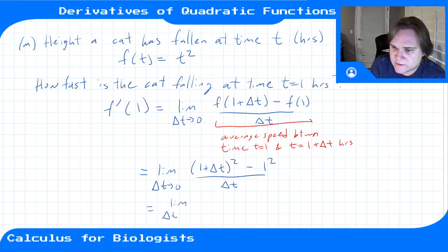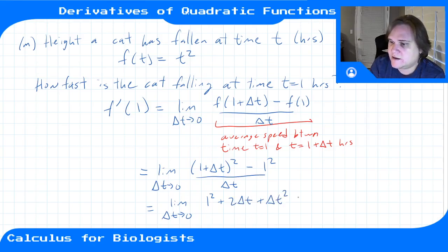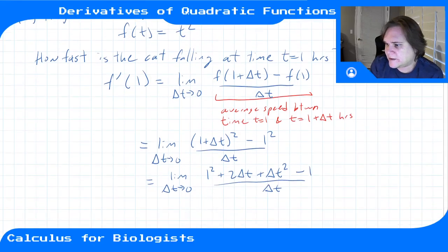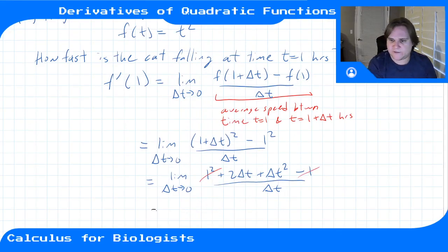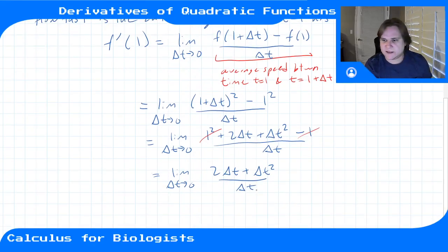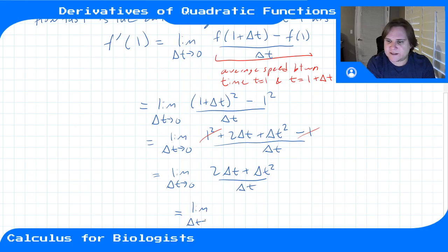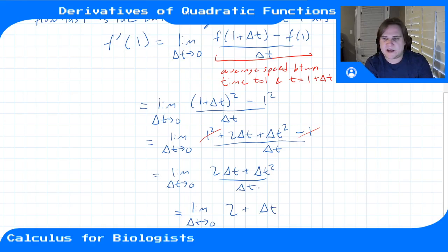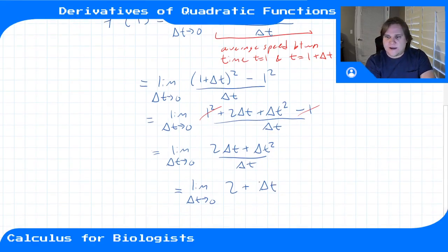This gives us: limit as delta t goes to zero of (1 + delta t)² minus 1² divided by delta t. Expanding, we get 1 + 2·delta t + delta t² minus 1, all over delta t. We still can't plug in delta t = 0 yet because we'd be dividing by zero. But we can cancel the ones, leaving the limit of (2·delta t + delta t²) / delta t. We can cancel out the delta t because it appears everywhere, giving us 2 + delta t.